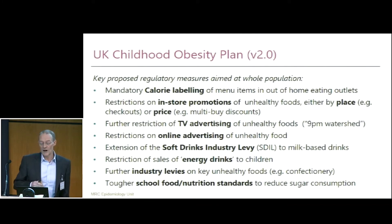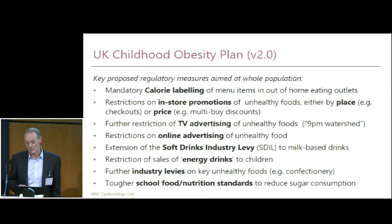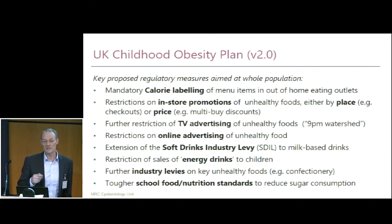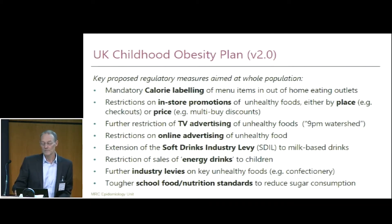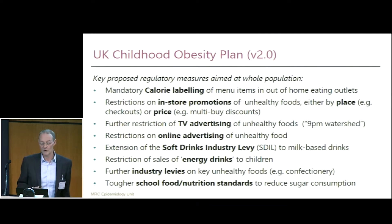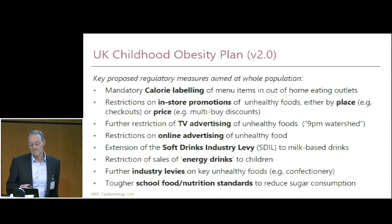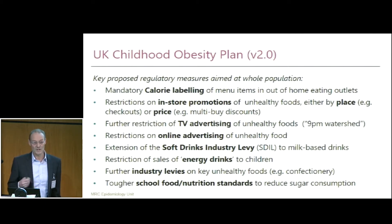We are really fortunate in the UK to now have a childhood obesity plan. The second version, which came out last June, focuses in particular on regulatory measures at a population level, primarily aimed at changing the commercial food system in ways that will lead to a healthier food offer for the public. These include calorie labelling, restrictions on in-store promotions in relation to placement or price of foods, restrictions on TV or online advertising of unhealthy foods, fiscal measures such as the soft drinks industry levy, and other restrictions on sales. There is also potential for further industry levies if voluntary reformulation doesn't work.